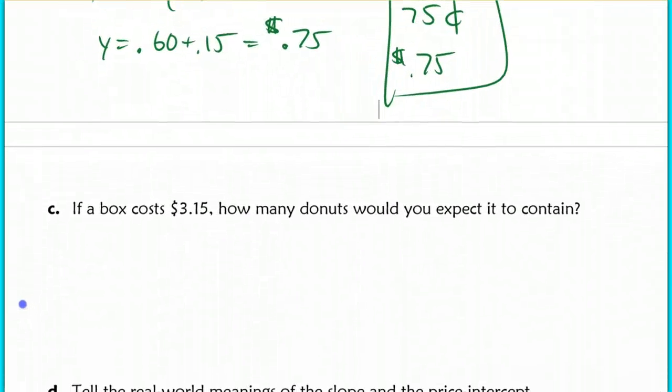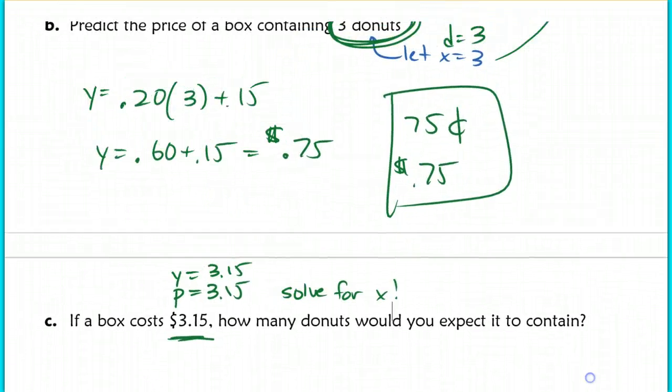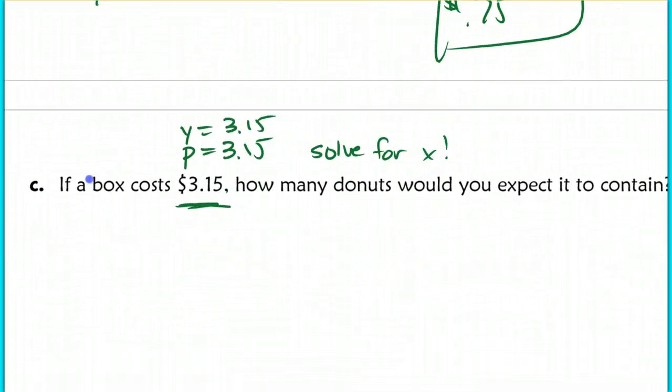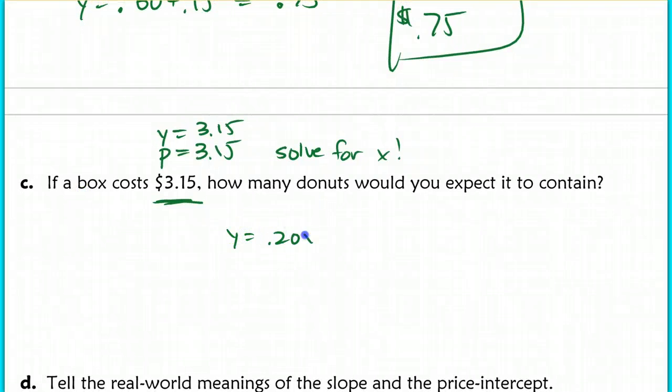Now, the next question says if a box costs this. So, in other words, they're telling you if price equals 3.15 or if the Y equals 3.15, how many donuts would you expect to contain? So, they're giving you the Y and they're asking you to solve for X. That's what they're telling you. So, in the last problem, they gave you the X. So, they said X equals 3. Now, solve for Y. So, you're always just going to be doing the opposite. So, you just need to make sure you understand which variable is which. So, here we're going to plug in into Y equals 0.20X plus 0.15. We're going to plug in 3.15. And we get 3 equals 0.20X. So, if we divide that, we should end up with 15, one-fifth, yeah, 15 donuts. Alright, so, those are kind of the easier parts.